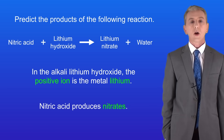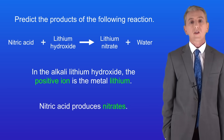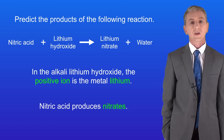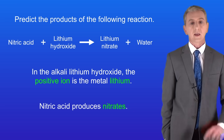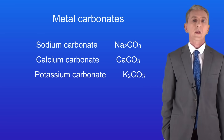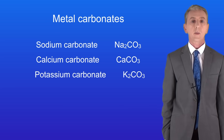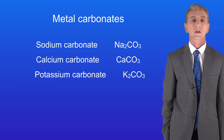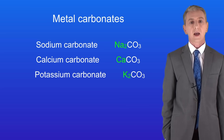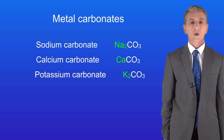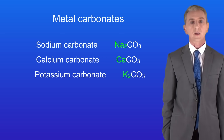We've seen how bases and alkalis react with acids. But there's another group of chemicals that react with acids to produce salts, and these are called metal carbonates. Here are three examples: sodium carbonate, calcium carbonate and potassium carbonate. You'll notice that each of these contain a metal ion — in this case sodium, calcium and potassium.